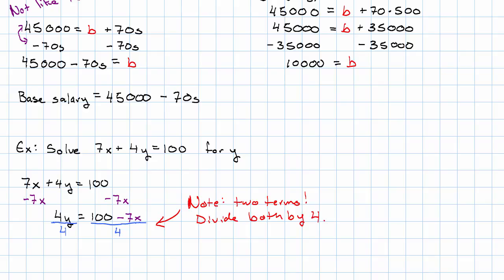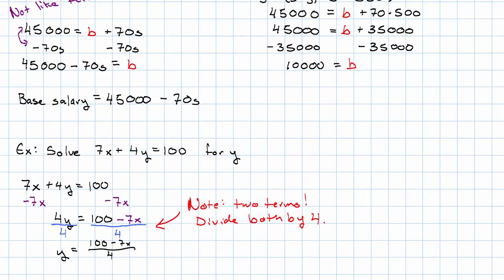This is really just the distributive property in action. Remember, division by 4 is just multiplication by a fourth in a funny hat. So we have Y equals 100 minus 7X over 4. If we want to simplify that, we have 1 fourth times 100 plus negative 7X. We distribute 1 fourth times 100, that's 100 divided by 4 is 25. Negative 7 times 1 fourth is just negative 7 fourths.